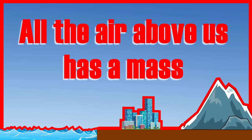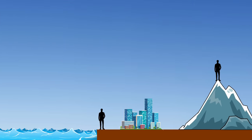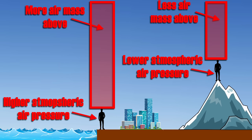Atmospheric air pressure is highest at sea level. When you go up onto a high mountain or higher altitude, there is less total air mass above you, so there's less weight pushing down on you, and atmospheric air pressure is lower the higher up you go in elevation.